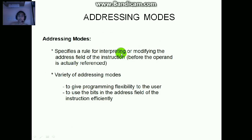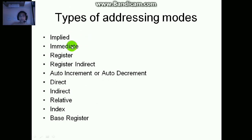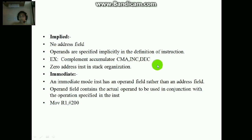Now there are different addressing modes. You can directly give data to a command like ADD 40, which adds 40 to the accumulator. Or give a register ADD R1, which adds the contents of R1 to the accumulator. You can also write ADD R1 R2, meaning add contents of R2 and R1 and store it in R1. The different types of addressing modes are: Implied, Immediate, Register, Register Indirect, Auto Increment, Auto Decrement — Auto Increment increases the AC value by 1, Auto Decrement decreases by 1 — then Direct Addressing, Indirect Addressing, Relative, Index, and Base Registers.